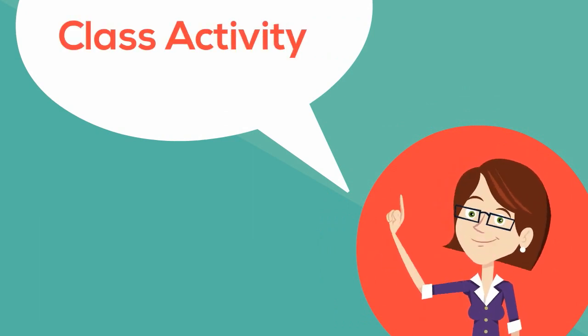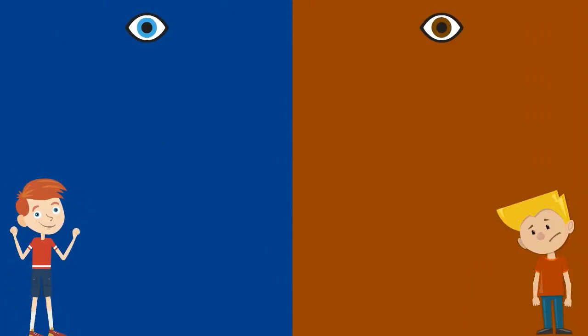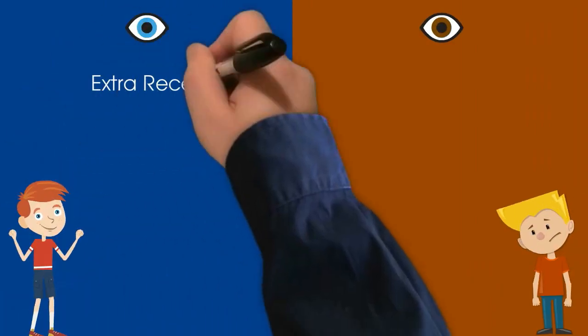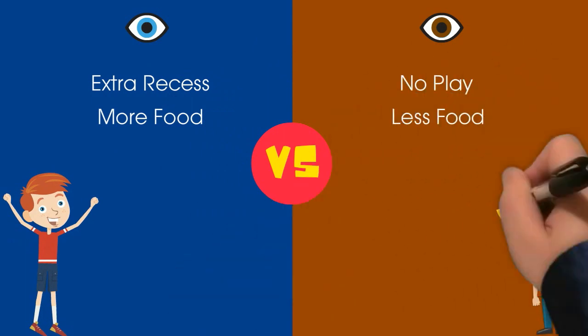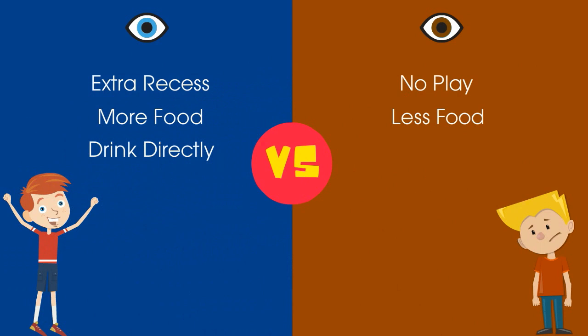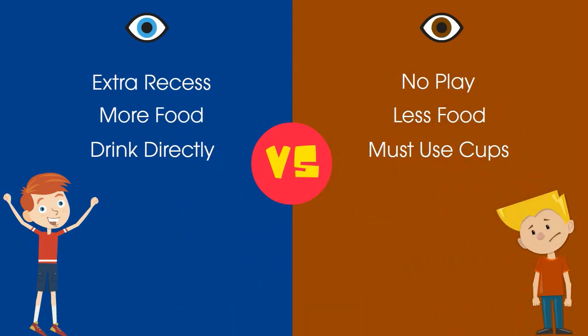The activity was to last for two days. She divided the class into two groups: blue-eyed and brown-eyed students. Blue-eyed students got five minutes extra recess. Brown-eyed students could not play on the play equipment. Blue-eyed students could have seconds. Brown-eyed students could not. Blue-eyed students could drink directly from the water fountain. Brown-eyed students had to use drinking cups. Brown-eyed students were not allowed to play with blue-eyed students.